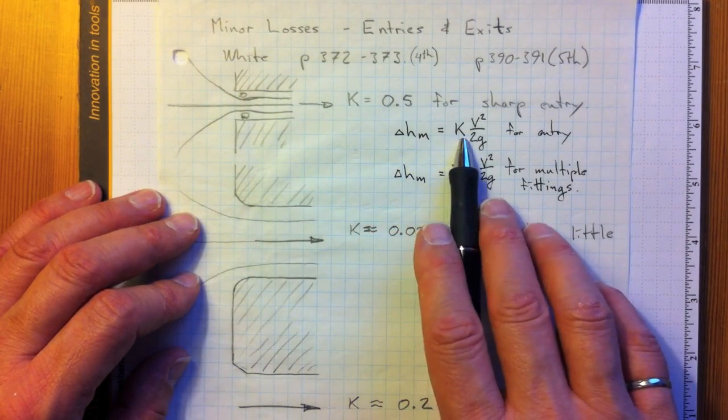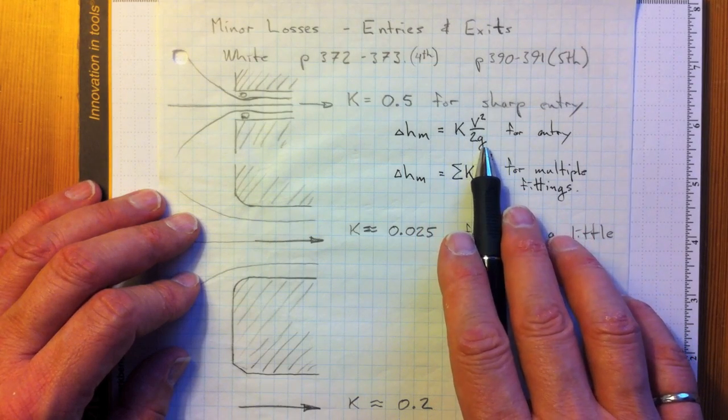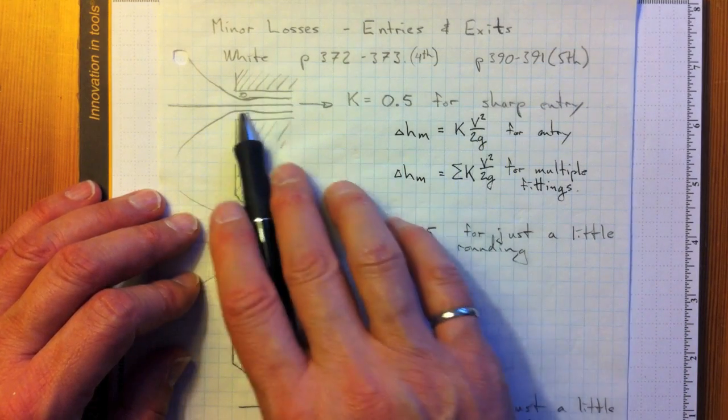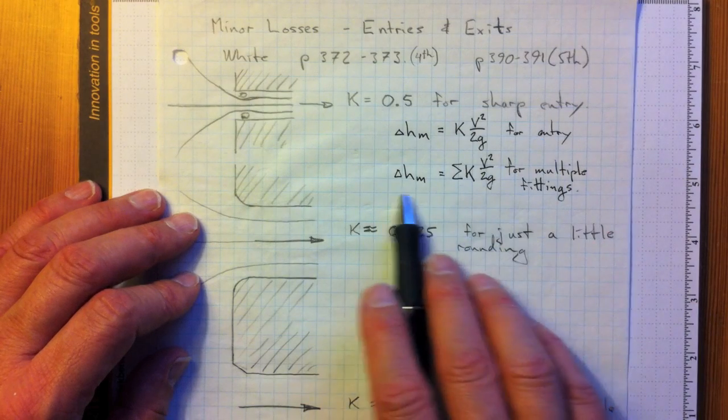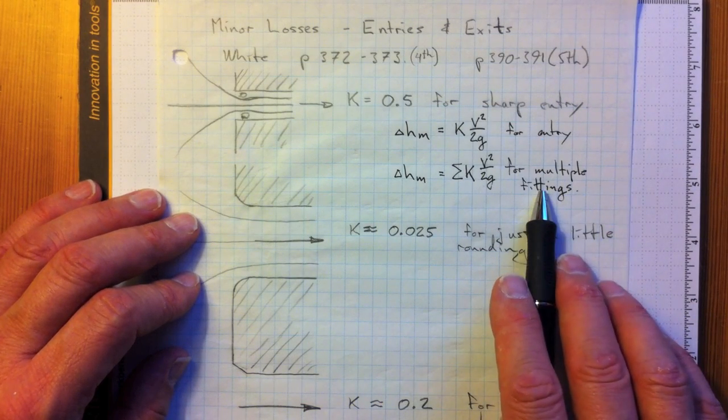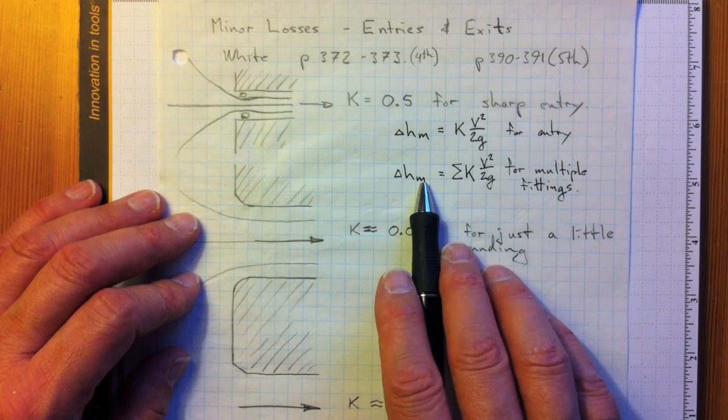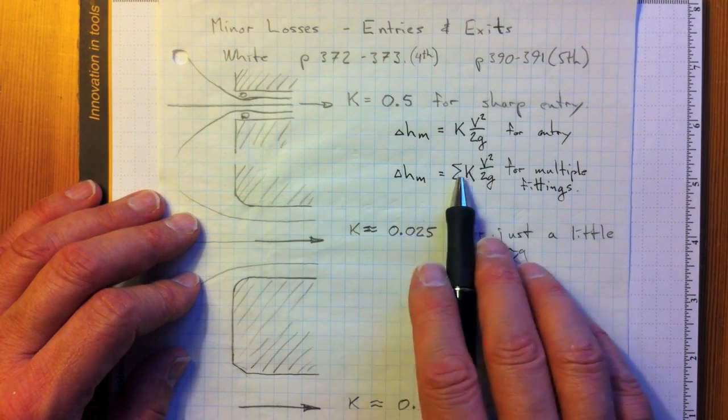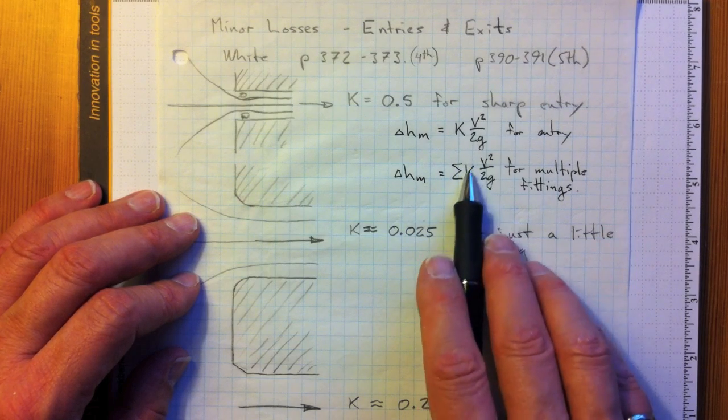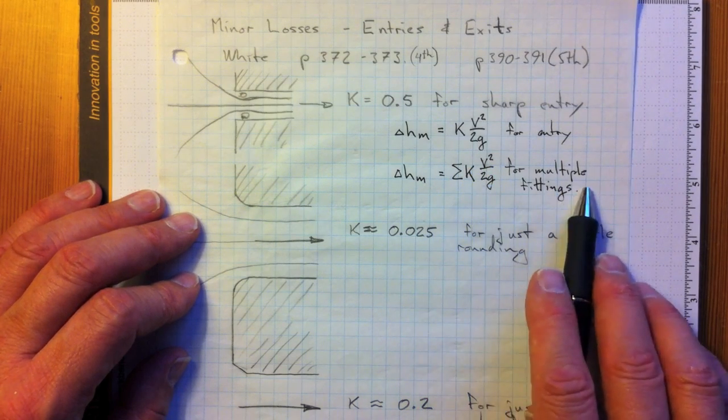So the minor losses are this loss coefficient times v squared over 2g for a single element in the flow. So if you have multiple fittings, multiple entrances or exits, elbows, tees, valves, things like that, then the total minor losses will be the sum of all the k values times v squared over 2g for the whole piping system.